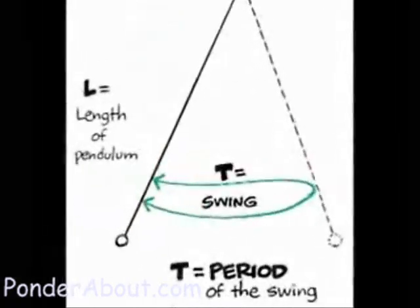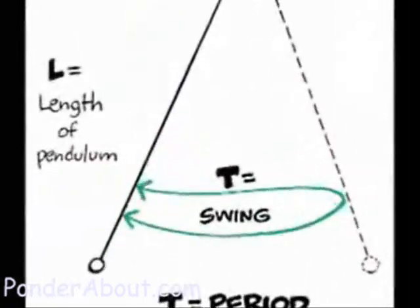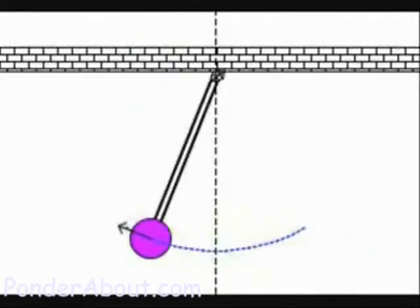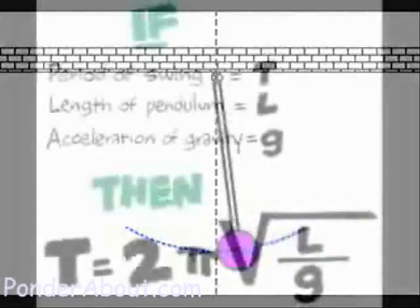If the pendulum's swinging quite free, then it's always a marvel to me that each tick plus each tock of the grandfather clock is 2 pi root l over g.